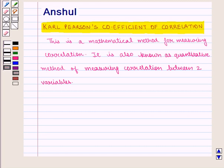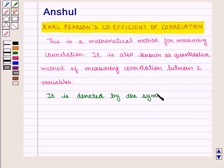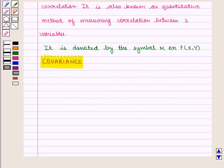It has been given by Carl Pearson, so it is known as Pearson's Coefficient of Correlation. It is denoted by the symbol R or Rho. This formula is based on the concept of covariance, so let us discuss covariance first.